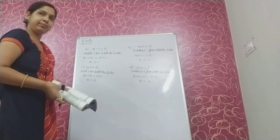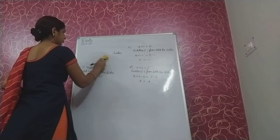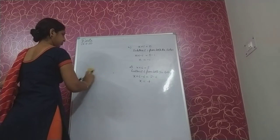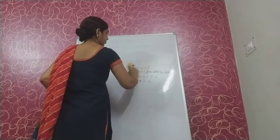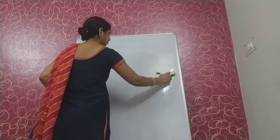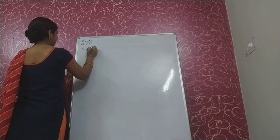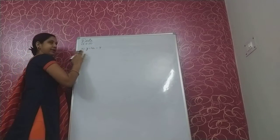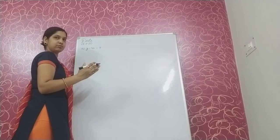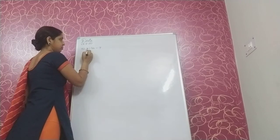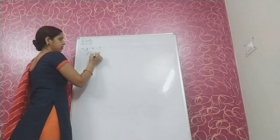Now we solve the remaining parts by transpose method. y minus 4 is equal to minus 7. Here we have y as variable. y is equal to minus 7 plus 4. And minus 7 plus 4 is minus 3.